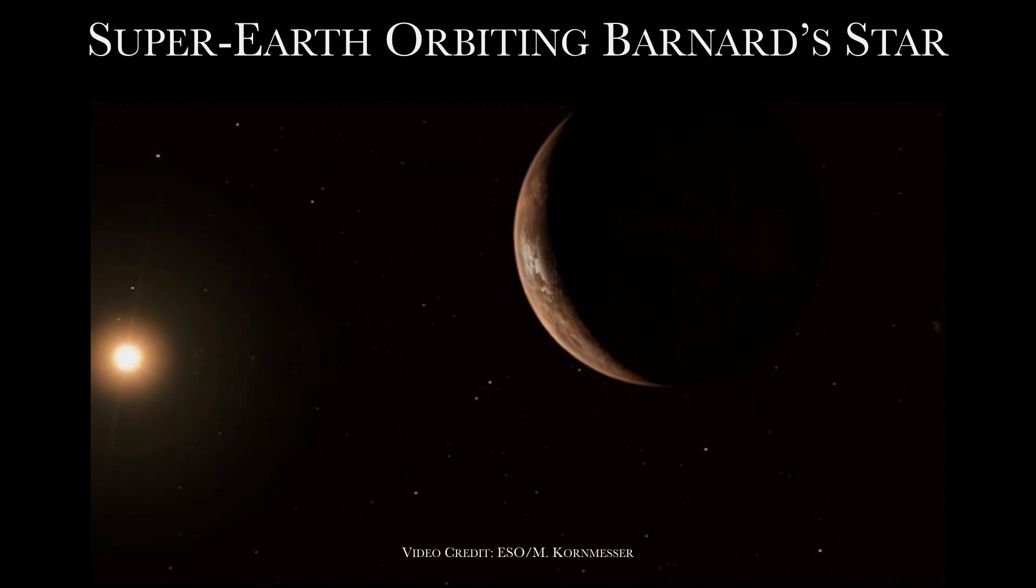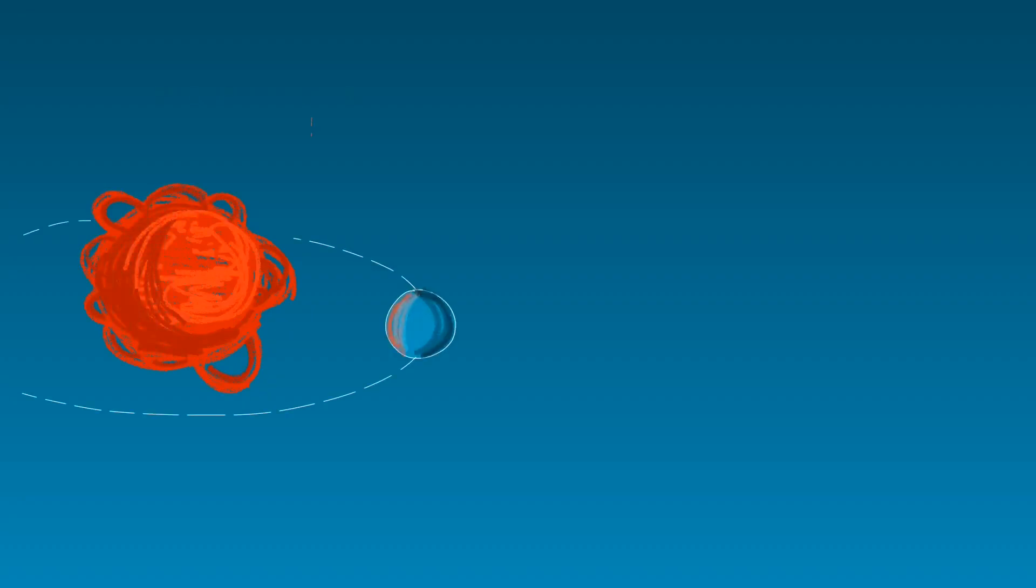A planet has been detected orbiting Barnard's star, a very low mass and cool red dwarf, about 6 light years away.